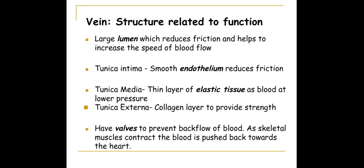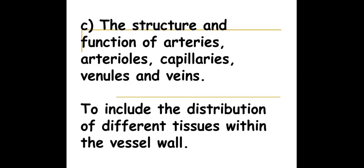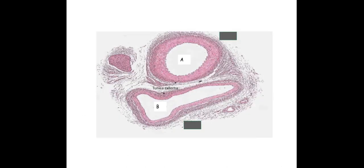We don't want blood to go back down towards the feet due to gravity, so the valves prevent that from happening, helping blood flow in one direction towards the heart. Looking at a photomicrograph, the key thing is that an artery has a thick wall and a narrow lumen, whereas a vein has a wide lumen and a thin wall.